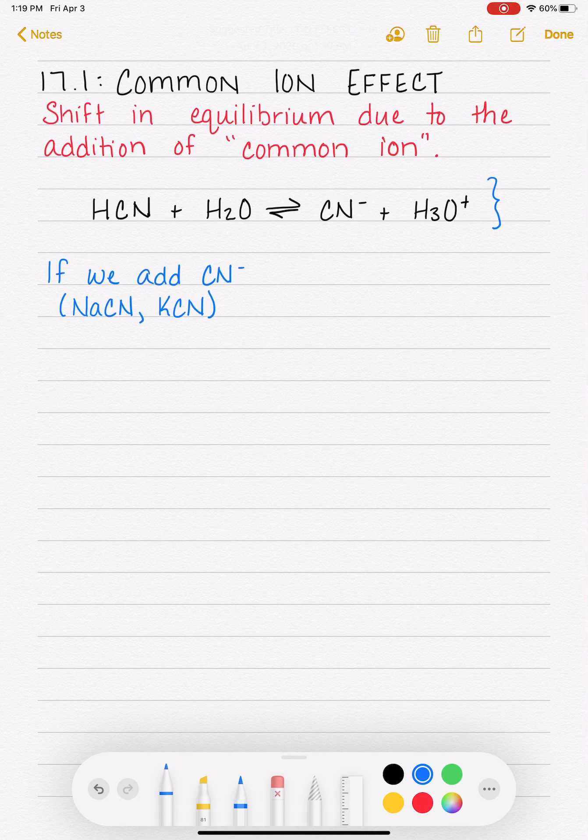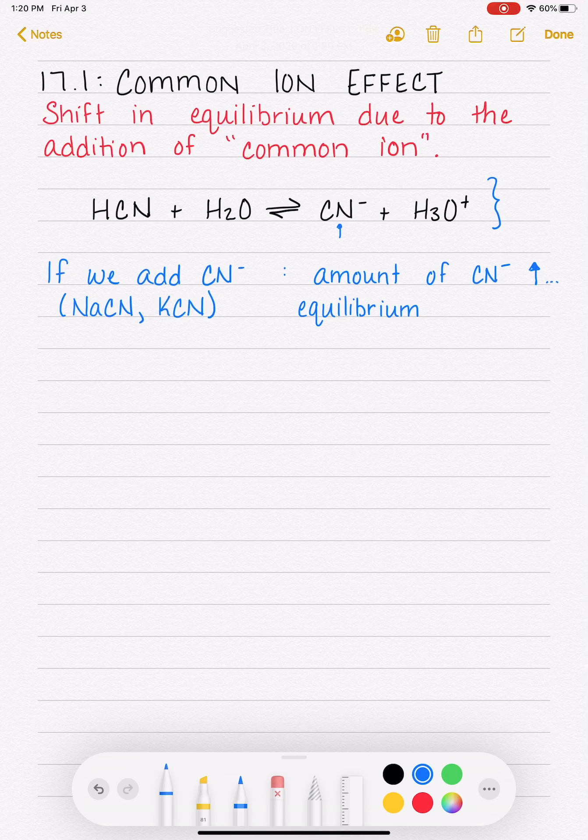If we add cyanide, the amount of cyanide will increase because we are adding cyanide to the solution. So this quantity will increase, and this will cause the position of equilibrium to shift to try to deal with that extra cyanide that we've added. If we increase the concentration of something, the position of equilibrium shifts away, in this case, to the left to try to use up the cyanide that we added.